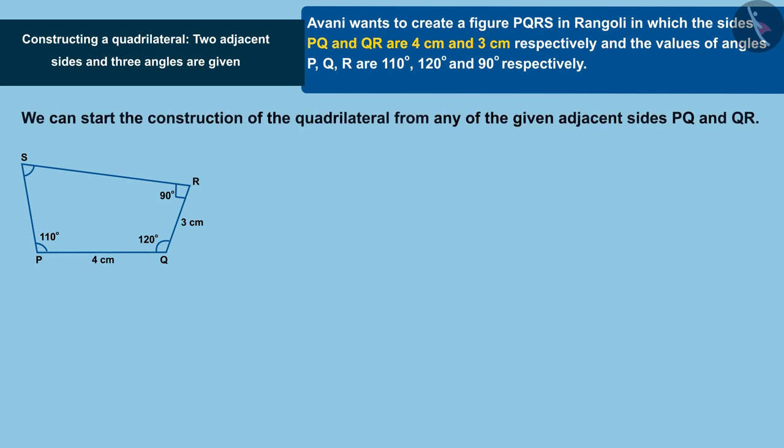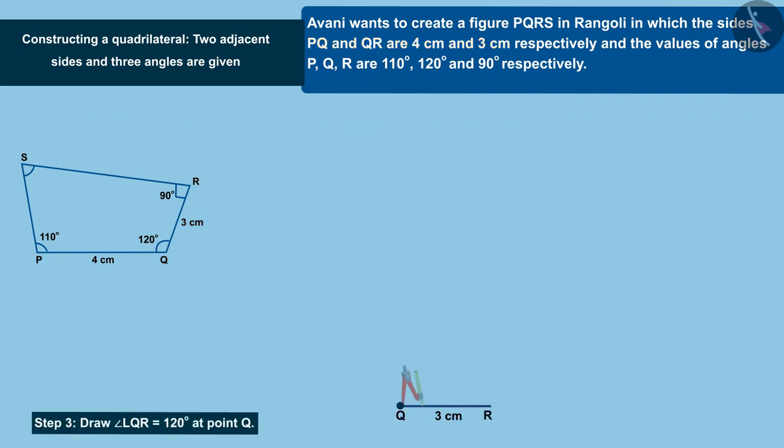We can start with any side. Suppose we make the side QR equals 3cm. Draw angle LQR equals 120 degrees at point Q.